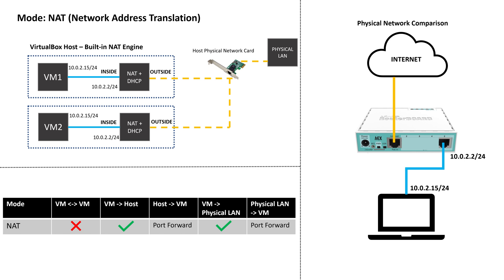There are lots of different NAT types like static, dynamic, and port address translation or PAT. However, for this tutorial, just keep in mind that NAT maps a private inside IP address to a public outside IP address. When you select this network mode, VirtualBox sets up a virtual NAT device and assigns it a default IP address of 10.0.2.2, which is also the default gateway used by the VM. The virtual NAT device uses the physical network adapter built into your computer as its external or outside network and maps this to your internal virtual LAN network.